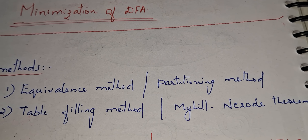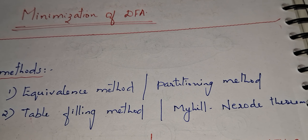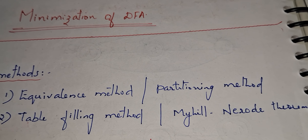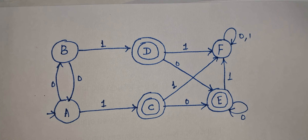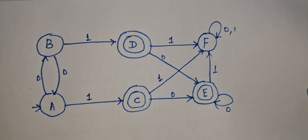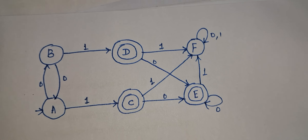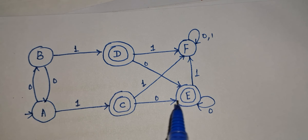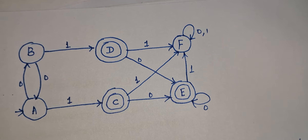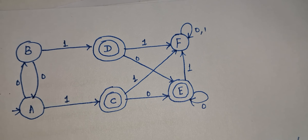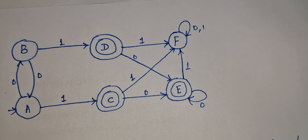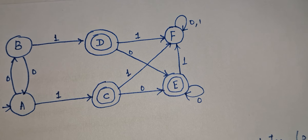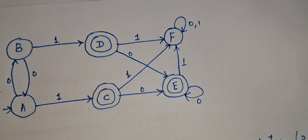In order to perform DFA minimization using the table filling method or Myhill-Nerode theorem, we need to follow some steps. Using one example I will explain how to perform DFA minimization. This is our DFA and I am going to perform DFA minimization using the table filling method. In this DFA the states A, B, C, D, E, F — there are six states. After performing minimization by using the table filling method, we will see the number of states will be reduced.